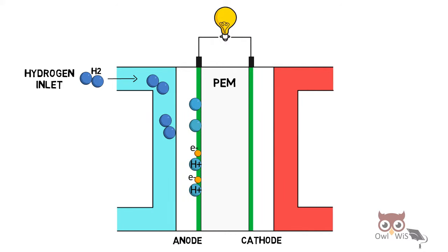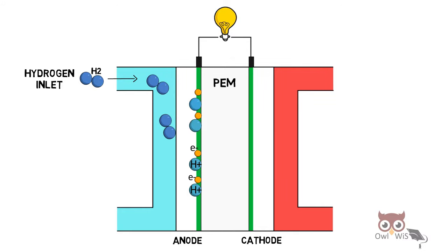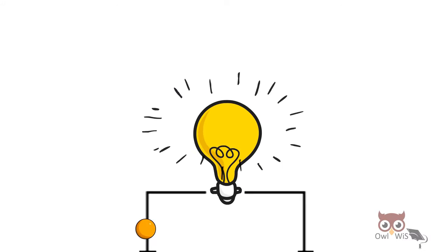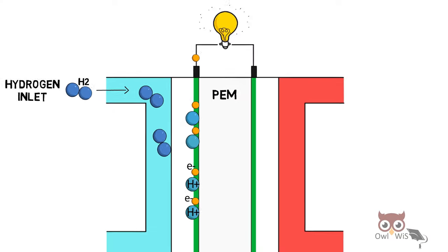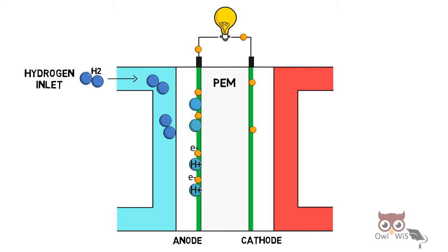As you can see, these electrons then flow through the external circuit and light up the load, in this case the bulb, and then they cross and move towards the cathode.